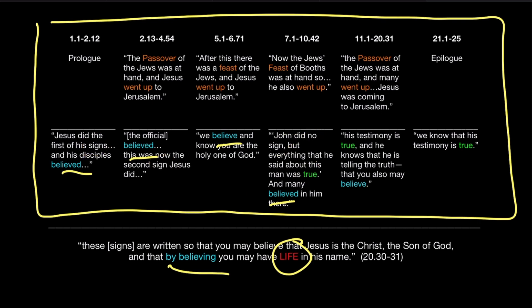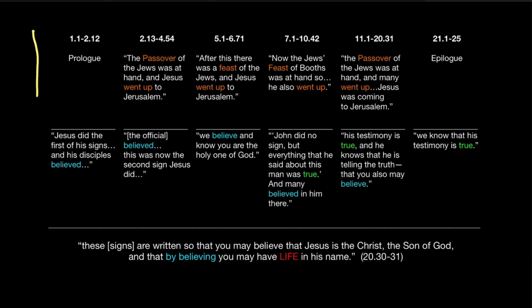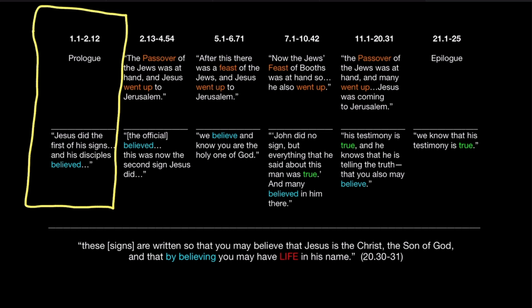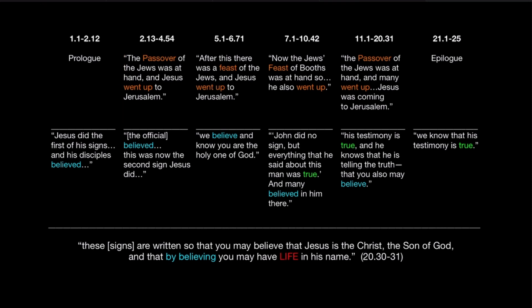We're now looking at the introduction. There's a lot of debate over how far the prologue extends, and structurally it appears to extend from chapter 1 verse 1 all the way to chapter 2 verse 12. We looked at the logical flow and thought progression, which is always the most important thing. The structure is secondary — it's a kind of coat hanger on which the coat is designed to sit so you can see the coat in its natural shape.